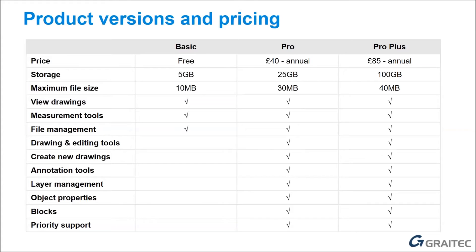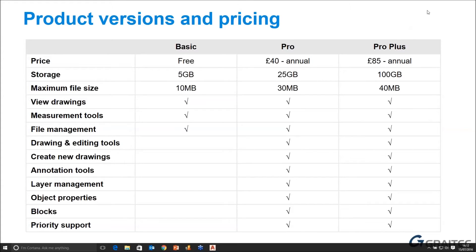The Pro version is £40 a year — not a lot of money. You can get this through the app store, but it works out a little bit more expensive that way. If you come through us, there's a small discount on that. You get more storage — 25 GB — similar to what you would get with any other subscription. Maximum file size of drawings is 30 MB. In addition to the basic tools, you get drawing creation, annotation, layer objects, blocks, and priority support. If you want to go to the next level, Pro Plus is £85 a year, and the main reason would be for the amount of storage available — four times as much, and also an increase in the file size you can open.